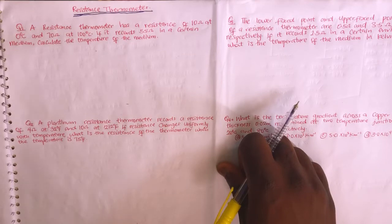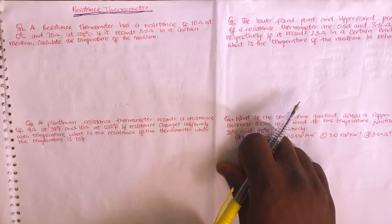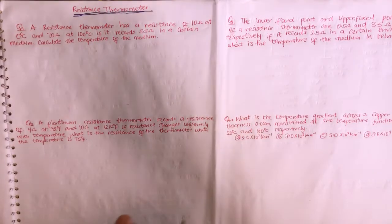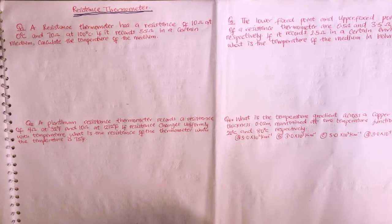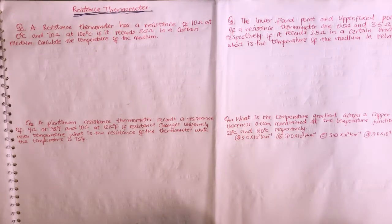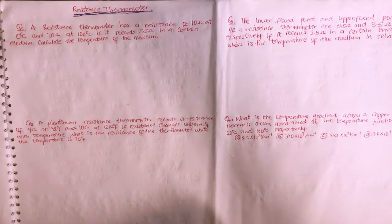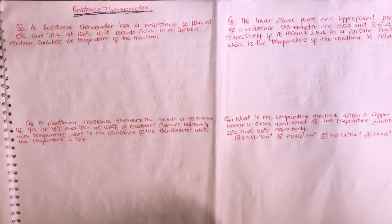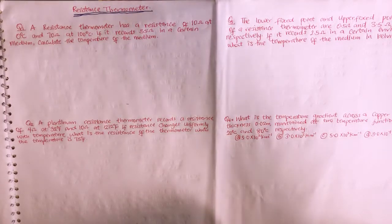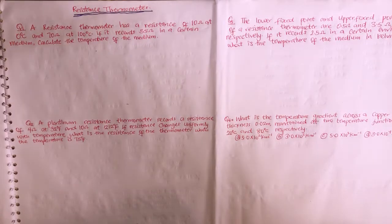You can apply the same method and steps to solve questions on resistance thermometers as we used for liquid-in-glass thermometers and conversion of temperature scales — including conversions between Kelvin, Celsius, and Fahrenheit. Now let's look at the four questions I have here.